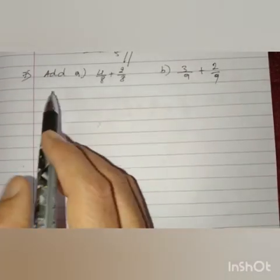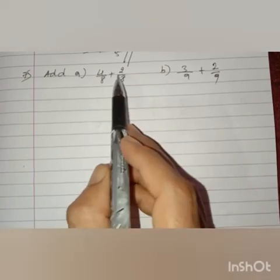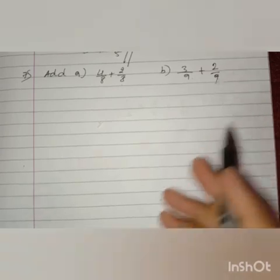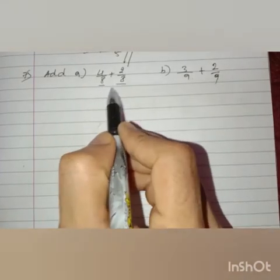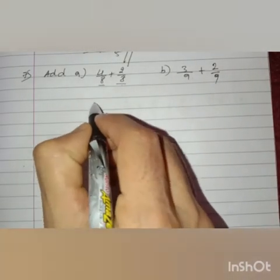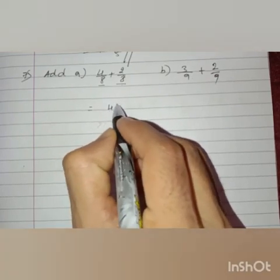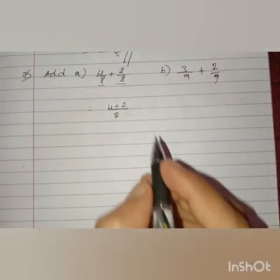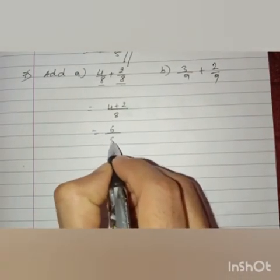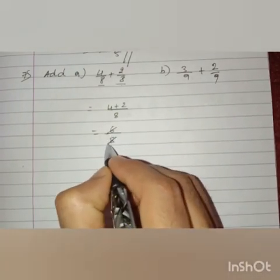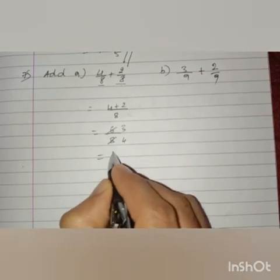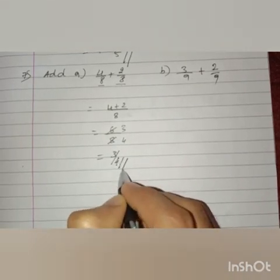Got it, children? 1 and 2 by 5. Next, question number 7: add 4/8 + 2/8, and 3/9 + 2/9. Here the denominators are equal, so we can add numerators directly. 4 plus 2 by 8 equals 6 by 8. Both are divisible by 2, so the final answer is 3 by 4.